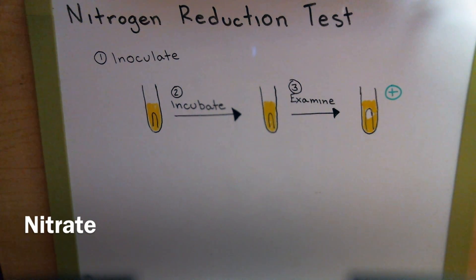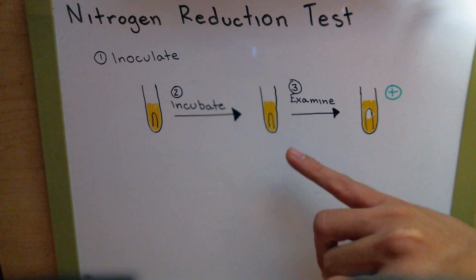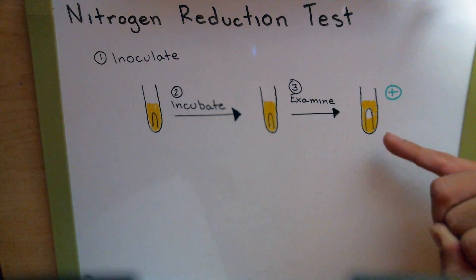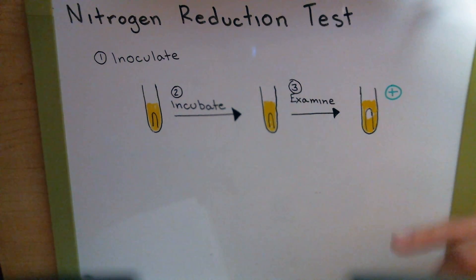The nitrogen reduction test. First, we're going to inoculate our bacteria into the test tube, and we're going to incubate that. Afterwards, we're going to examine our Durham tube to see if there's a bubble in there. Now, the thing here is that the microbes that we use, we don't want them to be fermenters. Because if this bubble is caused by a fermenter, we don't know if this gas is caused due to the process of fermentation or the reduction of the nitrogen.